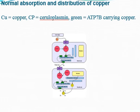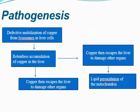This diagram shows copper intake and excretion when well balanced. In pathogenesis, there is defective mobilization of copper from the lysosomes in the liver, causing accumulation of copper in the liver and the patient presents with liver disorders. When copper gets deposited in other organs it damages them, including the brain. Copper that escapes the liver damages other organs, and there is lipid peroxidation of the mitochondria.